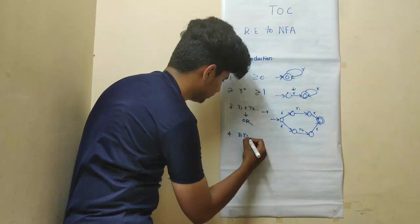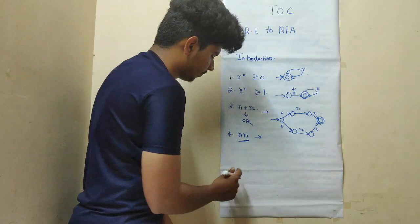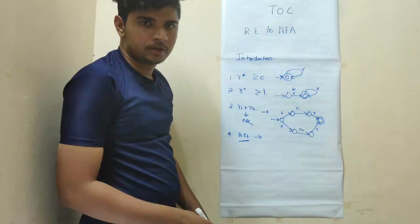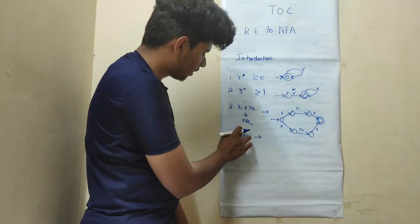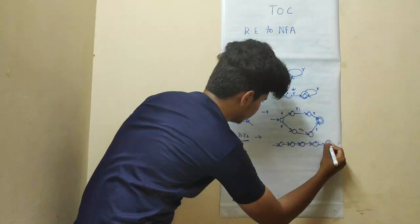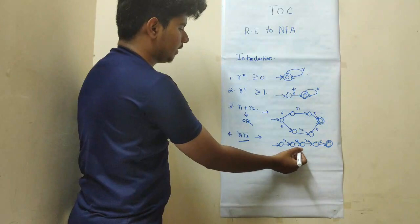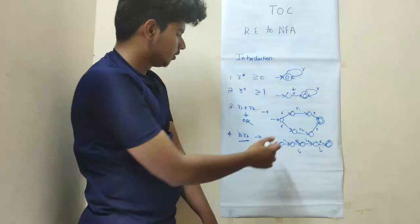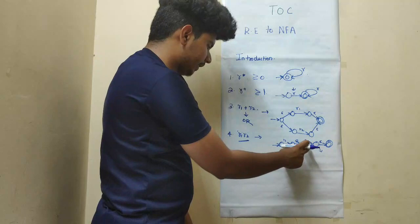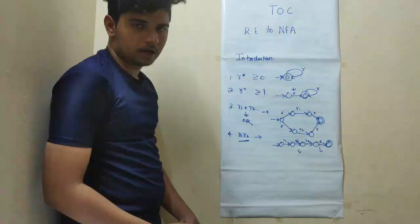The last one is concatenation — R1 into R2. How we are going to represent R1 into R2: here we are going to accept R1 and R2. We have R1, then epsilon, then R2, then epsilon. Here also we are having empty transitions — empty moves. We have R1 and R2; we can concatenate R1 and R2 together, and then only we can reach the final state. So this is the equivalent finite automata representation for R1 and R2.